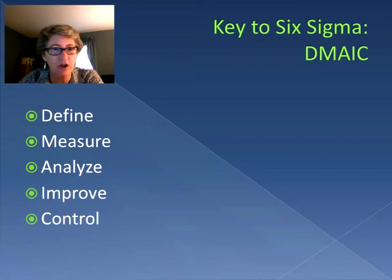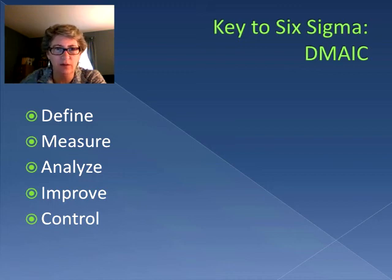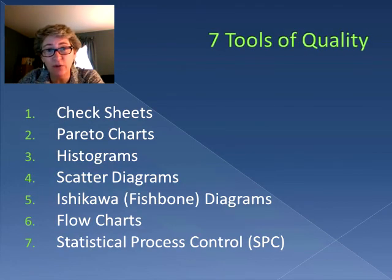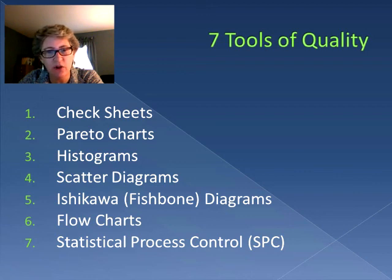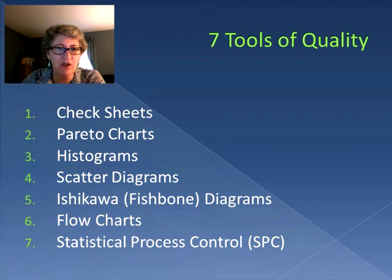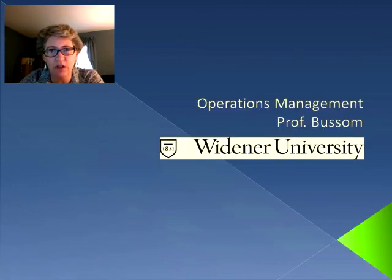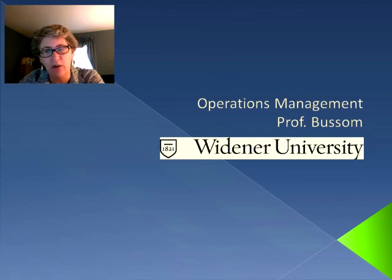But how do we actually go about doing that? This is where we talk about the seven tools of quality. Most of them are very simple to use, but they're very effective. They are check sheets, Pareto charts, histograms, scatter diagrams, Ishikawa — otherwise known as fishbone or cause and effect diagrams — flow charts, and statistical process control. In the next few sessions, we're going to be taking a look at each one of those particular tools and see what we can learn from them and how we can use them to improve processes.